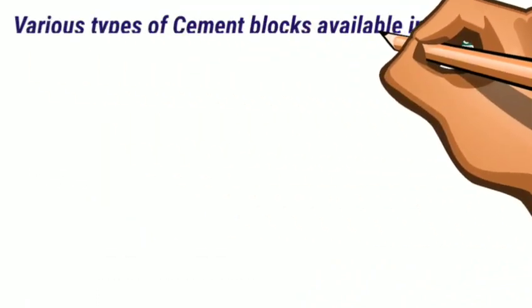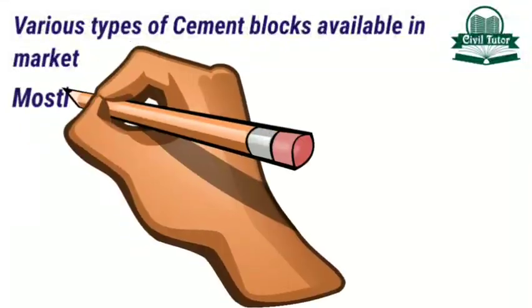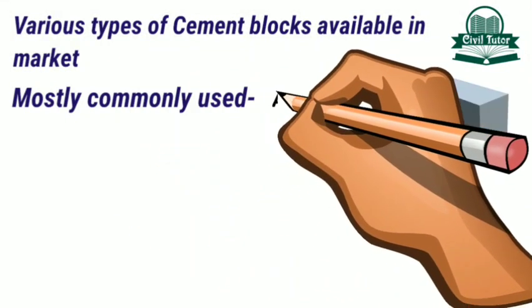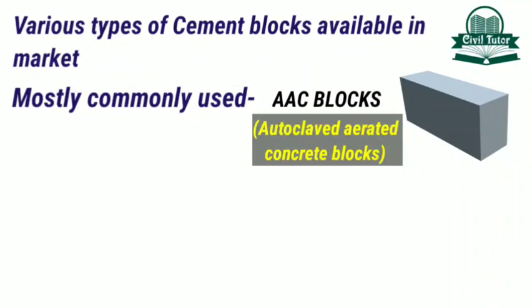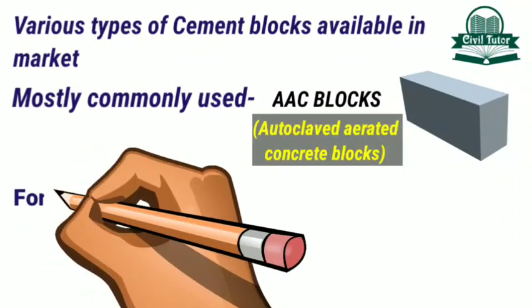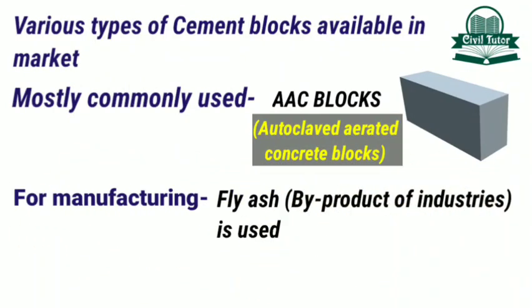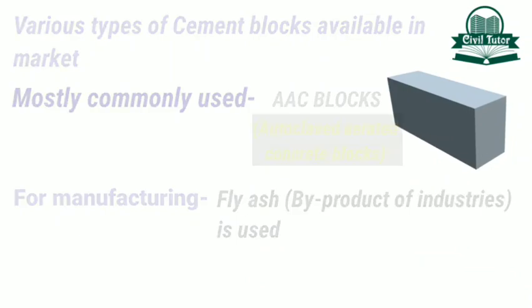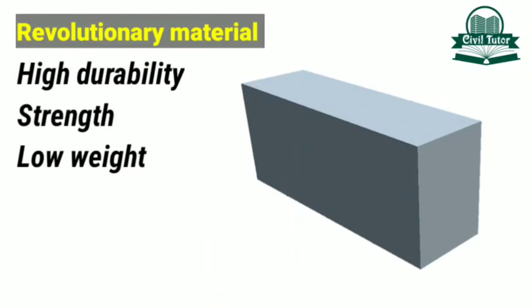There are various types of cement blocks available in the market, the most commonly used being AAC blocks — that is, autoclaved aerated concrete blocks. For manufacturing these blocks, fly ash as a byproduct of industries is used. It proved to be a revolutionary material with a unique combination of high durability, strength and low weight.